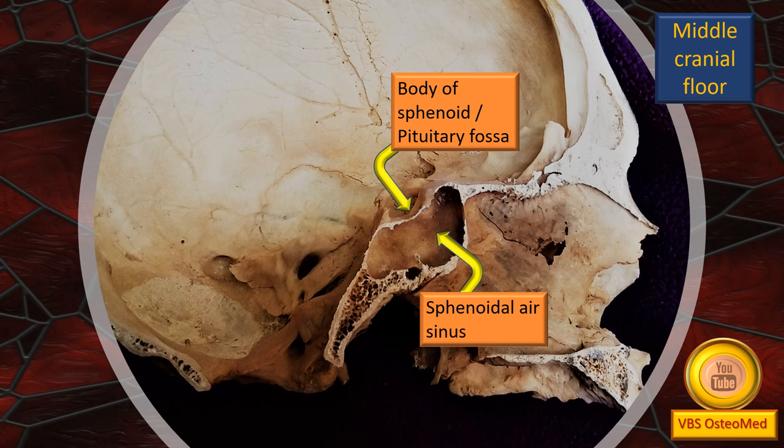This is a sagittal section of the skull. The body of the sphenoid is well seen. The sphenoidal air sinus is a huge cavity, and its roof is the floor of the pituitary fossa. That relationship can be very well seen — right below is the sphenoidal air sinus.